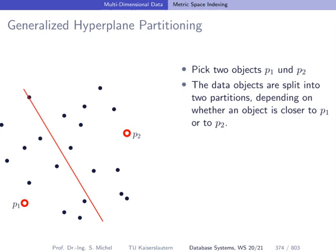One approach here is the so-called generalized hyperplane partitioning. This partitioning creates a tree that we call the generalized hyperplane tree, or GH tree. What you see here are objects — these black dots — and from these objects we pick two objects specifically. We call these pivots: pivot 1 and pivot 2. These are marked here in red.